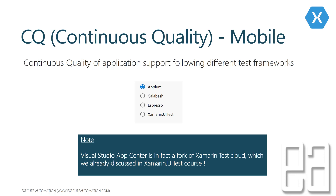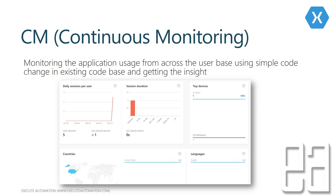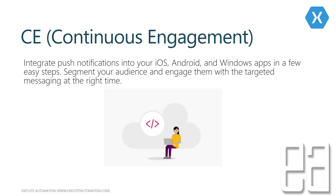Continuous monitoring is another neat option not available in Xamarin Test Cloud. It lets you monitor how many sessions are being handled by your application, how many people are using it at a given time, which country they're accessing from, the language being used, top devices, and daily sessions per user — similar to website monitoring. Continuous engagement lets you push notifications to iOS, Android, and Windows apps, segment your audience, and engage them with targeted messages at the right time.